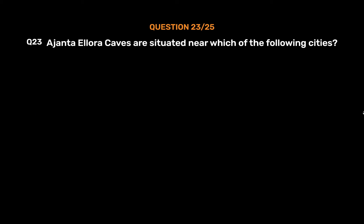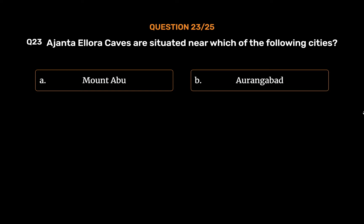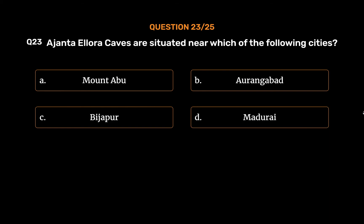Question No. 23. Ajanta and Ellora Caves are situated near which of the following cities? Option A: Mount Abu. Option B: Aurangabad. Option C: Bijapur. Option D: Madurai.